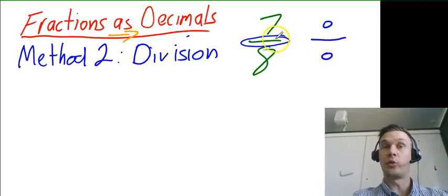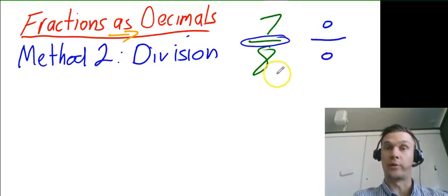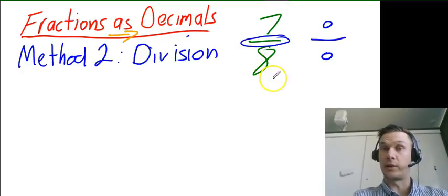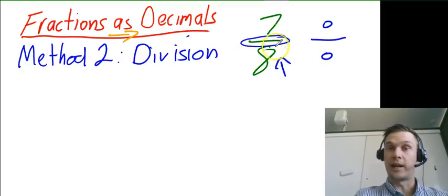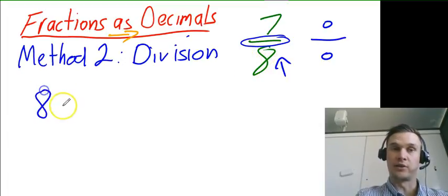So basically all we need to do is divide the top number by the bottom number. So if we did this one here as an example we have 7 over 8. You have the 8, so the bottom number, the denominator, goes outside the division symbol.